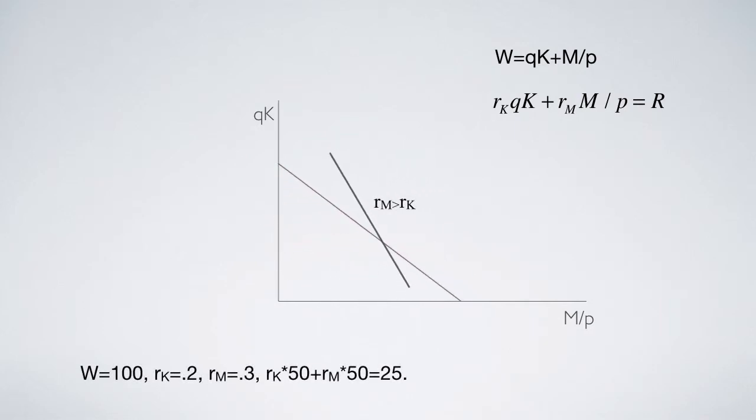Things will not be the same when the rates of return are different. For example, when RM becomes 0.3, the weighted return increases to 25.